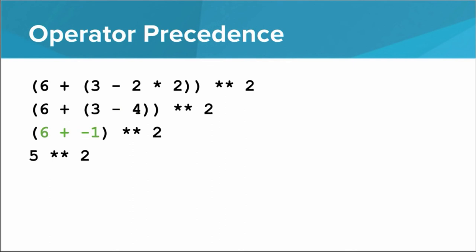And finally, we're left with a simple exponentiation expression, and the final result is 25. Note that even though exponentiation had higher priority than multiplication, addition, or subtraction, because of the way the parentheses were arranged, it was the last operator to be evaluated.